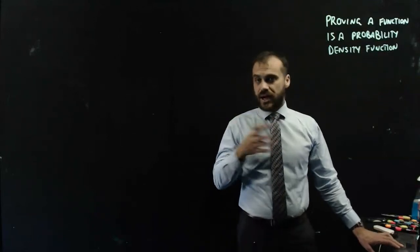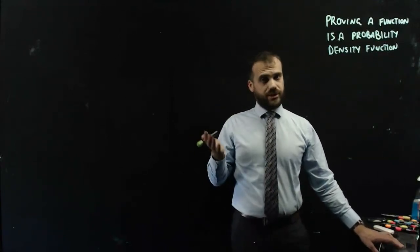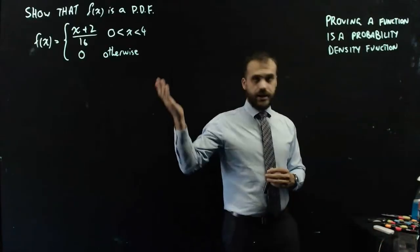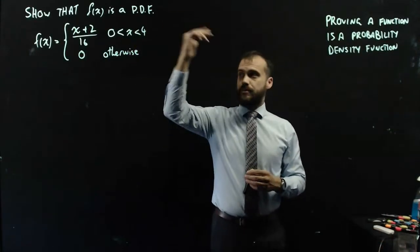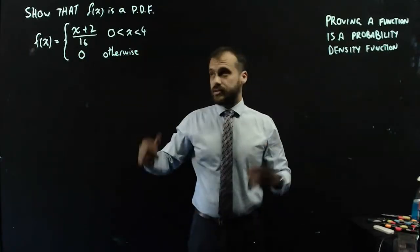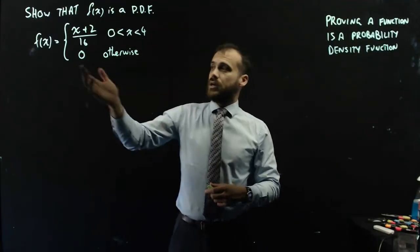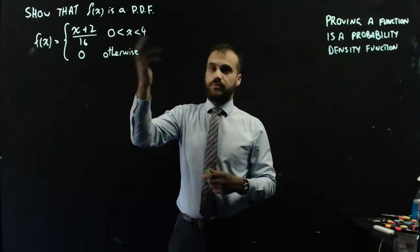So somebody shows you a function and asks you the question, is this a probability density function? You can prove it, and here's how. So here's my question, show that f of x is a PDF. Here is f of x. f of x is equal to x plus 2 on 16 between 0 and 4, and 0 otherwise if it's not between 0 and 4.